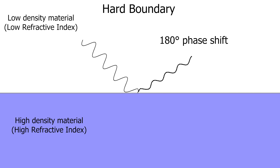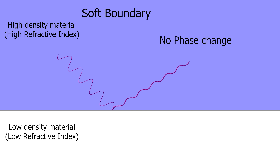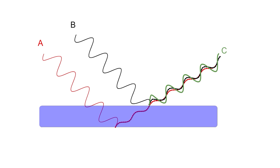So you'll have a reflection at the air-to-water interface, and then the light that makes it through will reflect from the water-to-air interface and become inverted. And because the light traveled a little further than the top reflection, it's now out of phase with the first wave. So at different spots, you get constructive and destructive interference.